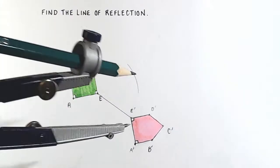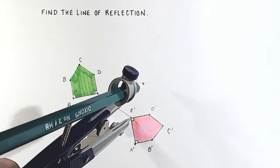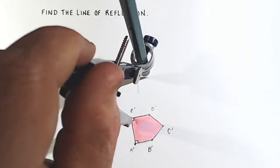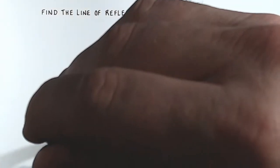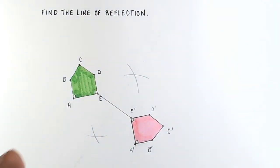And then I'll flip, put my compass point over at E prime. And I'll draw another arc. And I'll spin that compass around and draw another arc. The line passing through these two arc intersections is the line of reflection.